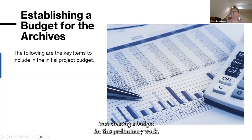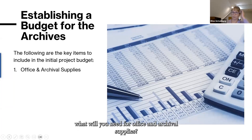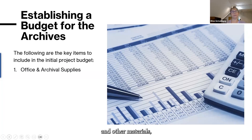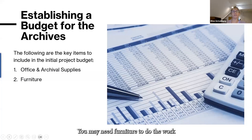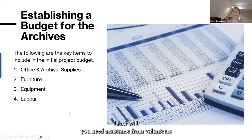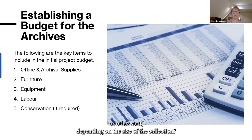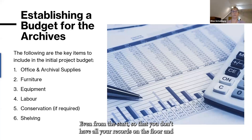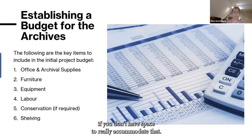You'll also want to create a budget for this preliminary work. You'll need to include elements like office and archival supplies — file folders, boxes, envelopes. We use supplies from staples and office stores like vinyl-coated paper clips, but archival supplies are essential. You may need furniture, equipment, computers, scanners, labor — will you need assistance from volunteers or other staff depending on the size of the collection? Will you need conservation support if there are major issues? Shelving is always very helpful from the start, so that you don't have all your records on the floor.